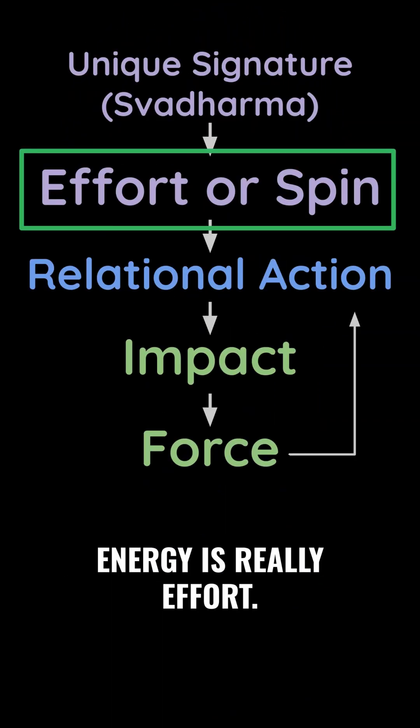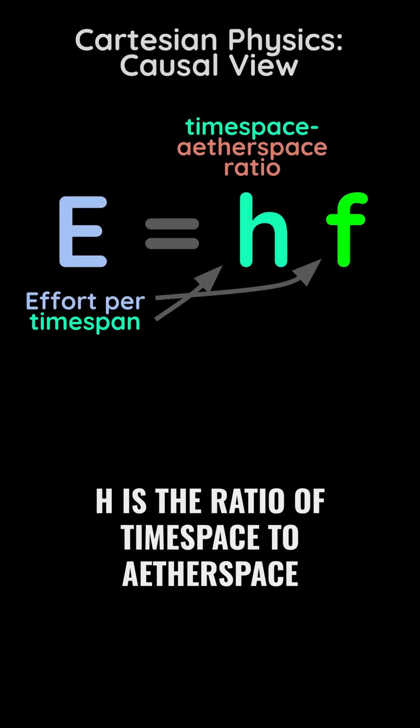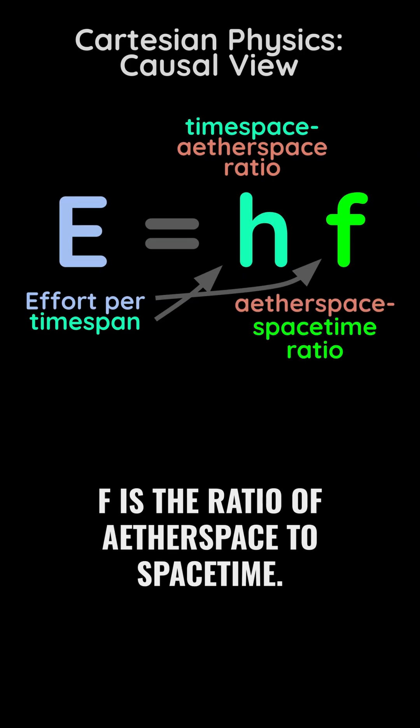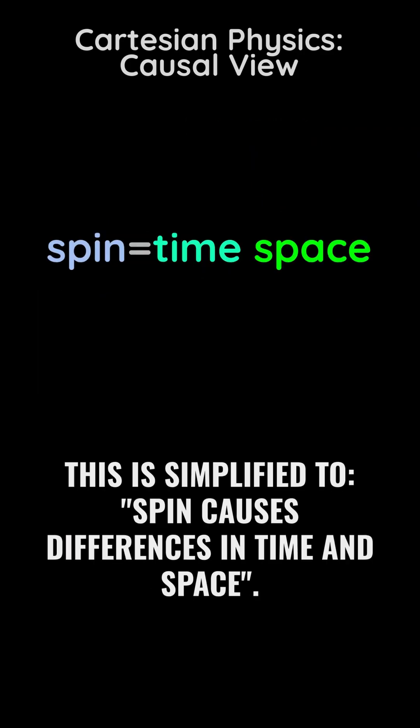Energy is really effort. H is the ratio of time-space to ether-space. F is the ratio of ether-space to space-time. This is simplified, too.